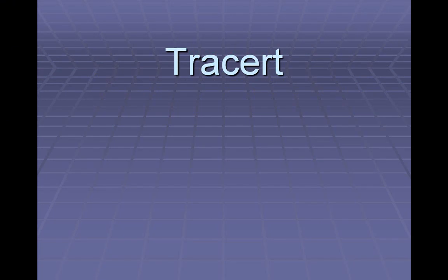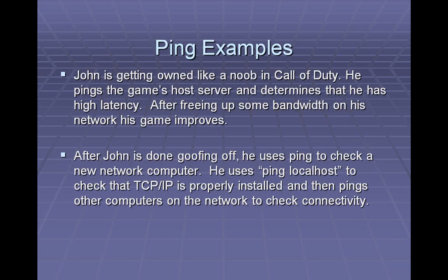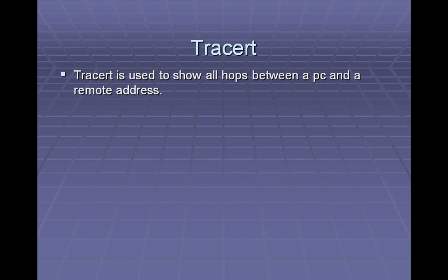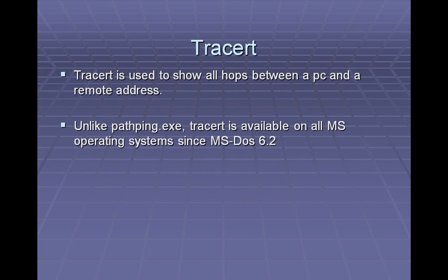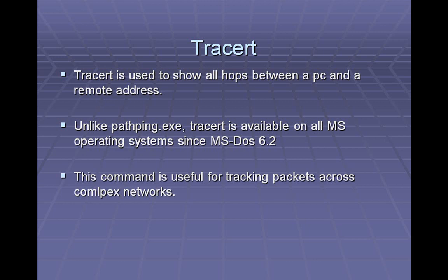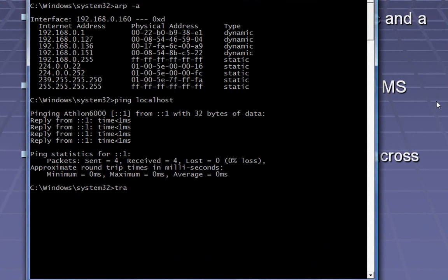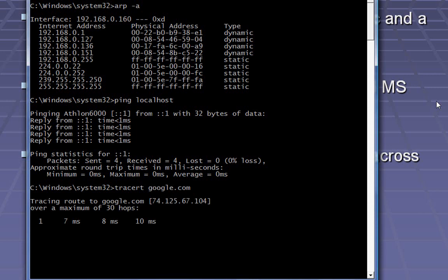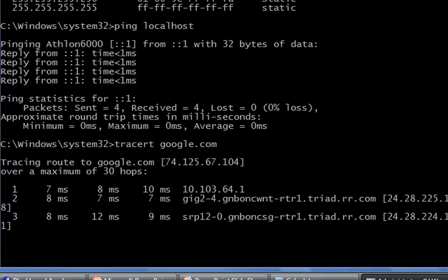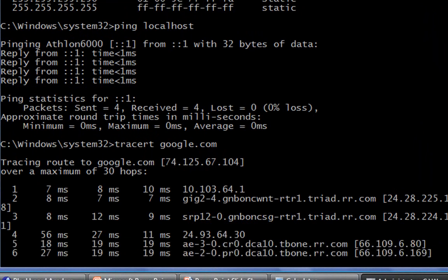The last tool we're going to look at is TraceRoute. TraceRoute is a tool that allows you to show all the hops between one location and another, either on the internet or on a local network. Unlike other tools, TraceRoute has been around since the very beginning — it goes all the way back to MS-DOS 6.2. This command is useful for tracing packets across a complex network. Let's do a TraceRoute to Google.com and see how many hops we have from my location to their location. It will take a second because it's actually resolving the names of the IP addresses for all the hops along the way and it reports how many milliseconds it's taking to respond for each one.